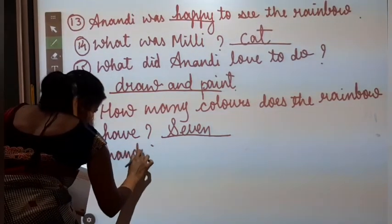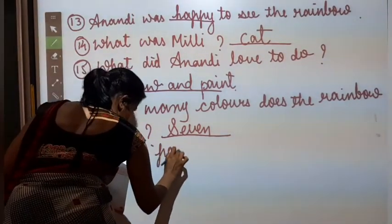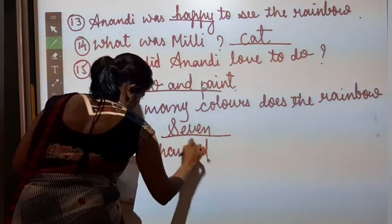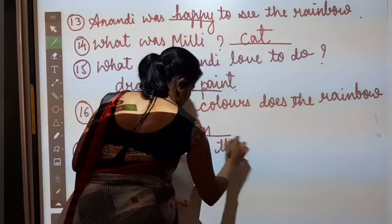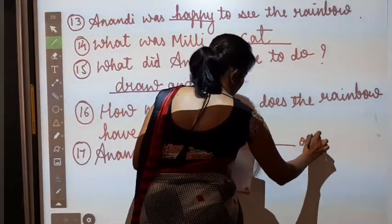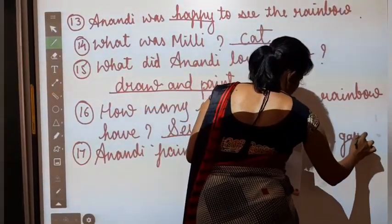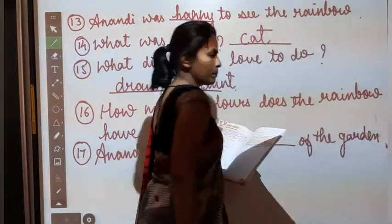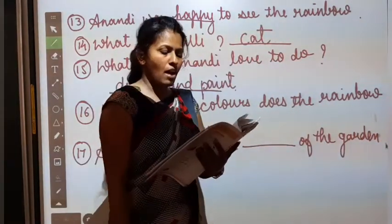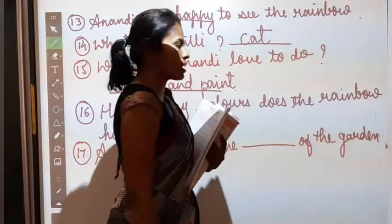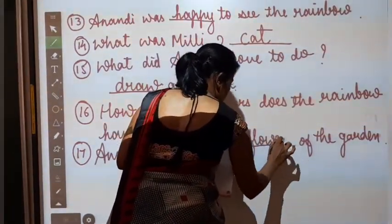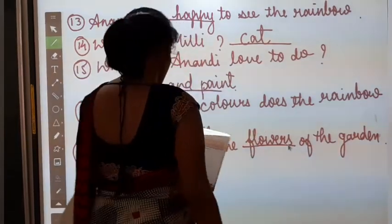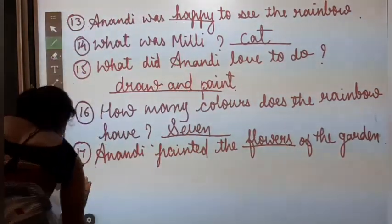Anandi painted the dash of the garden. So usne kya paint kiya garden ke? Flowers, grass, courts, trees. So she painted the flowers of the garden. Okay. And number eighteen.